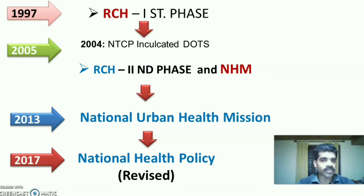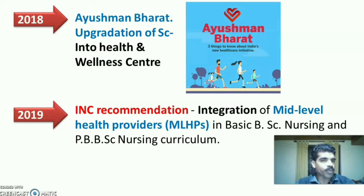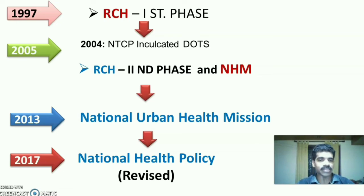During 2004, the National Tuberculosis Control Program incorporated DOTS — Direct Observation Treatment Short Course. In 2005, RCH second phase started along with the National Rural Health Mission (NRHM). In 2013, the National Urban Health Mission (NUHM) started in India.